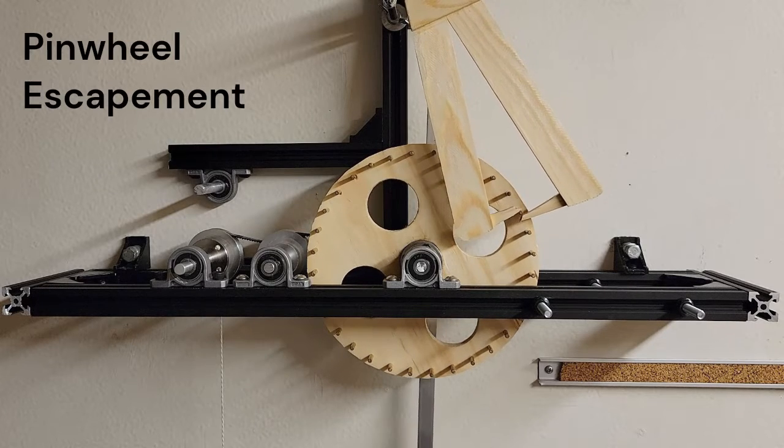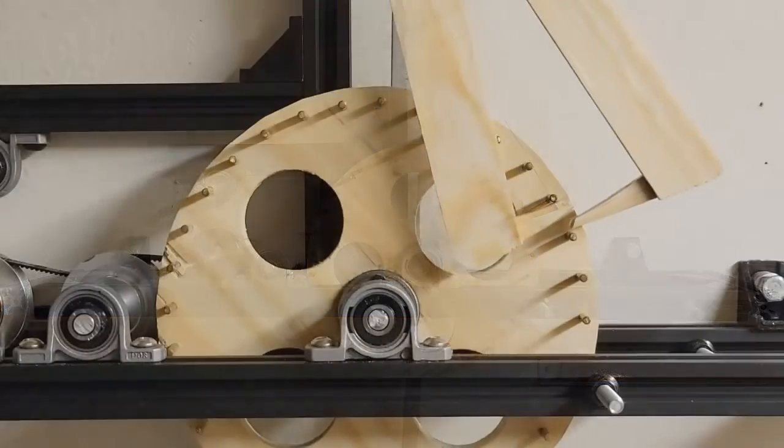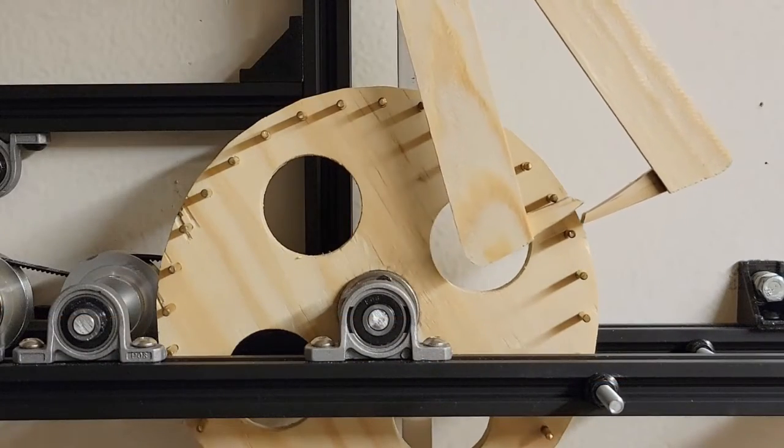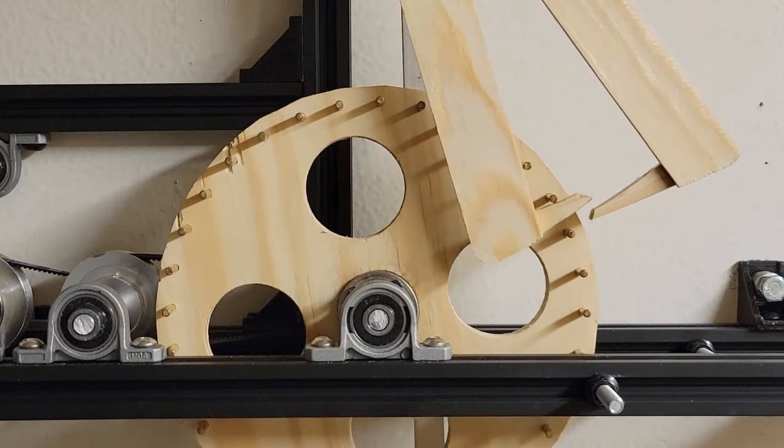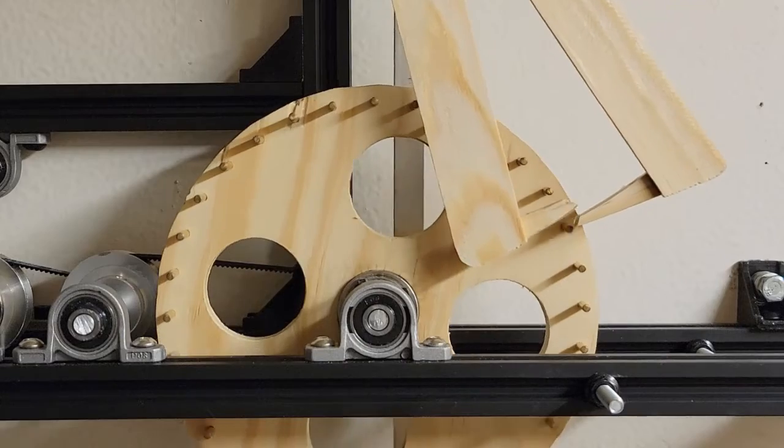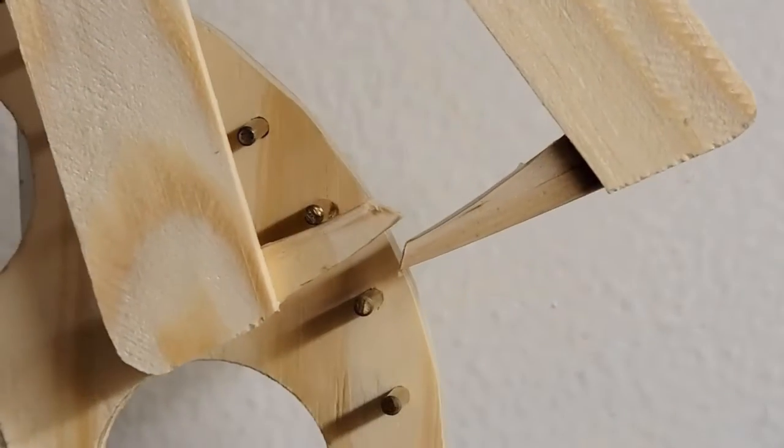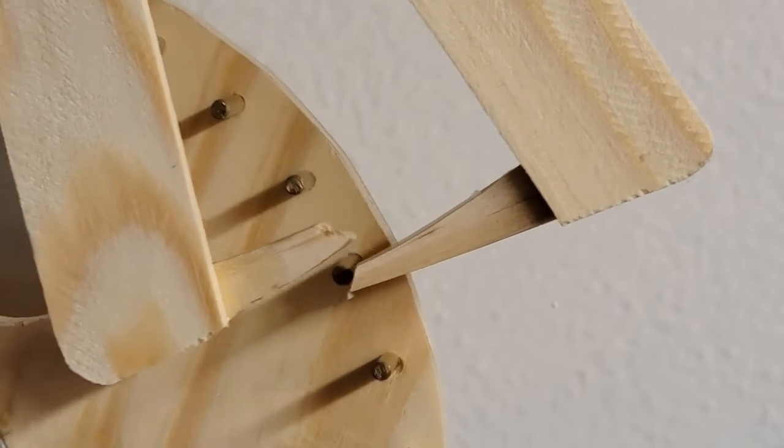Next is the simple pinwheel escapement invented in about 1741. This escapement has no moving parts and is easy to build. The only problem is that the pushing surfaces, the pallets, have to be narrow enough for both to fit between adjacent pins.